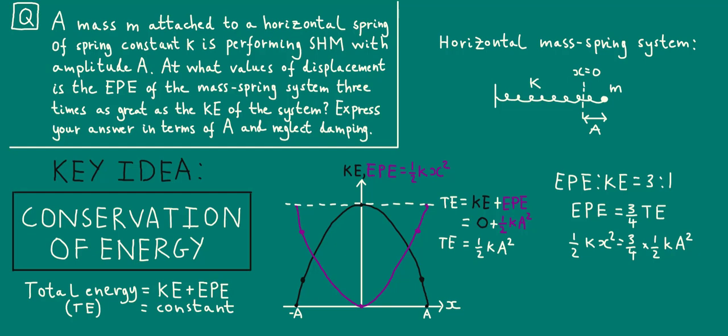Now, cancelling common factors and solving for x, we find that the displacement is equal to plus or minus root 3 over 2a or approximately plus or minus 0.87a. These are the displacements at which the EPE of the mass spring system is three times as big as the kinetic energy of the system.